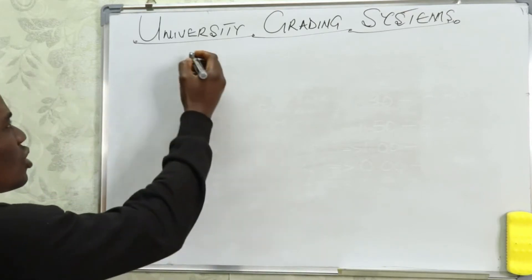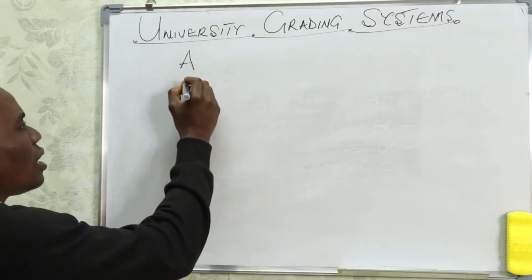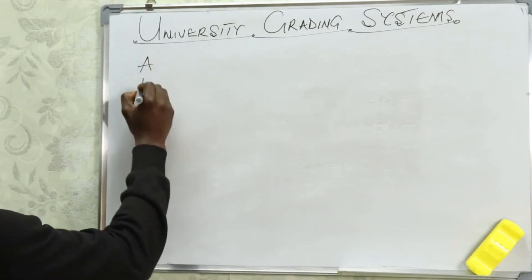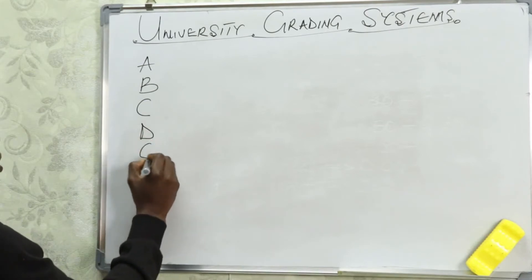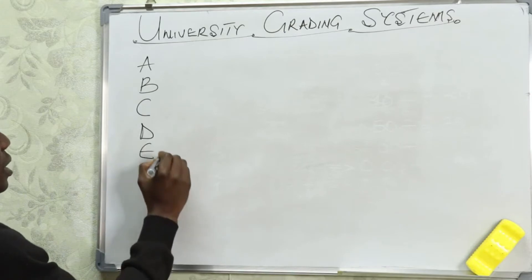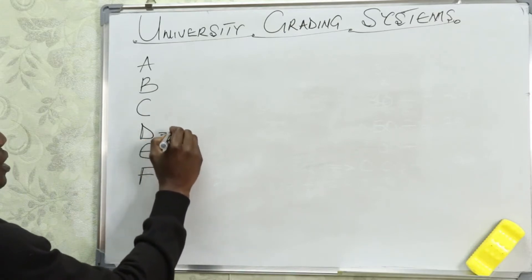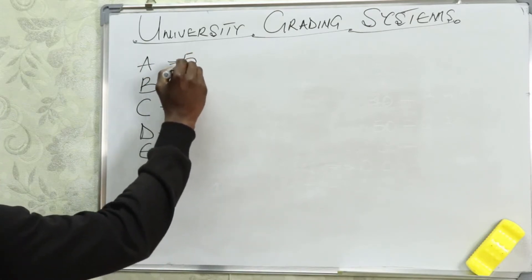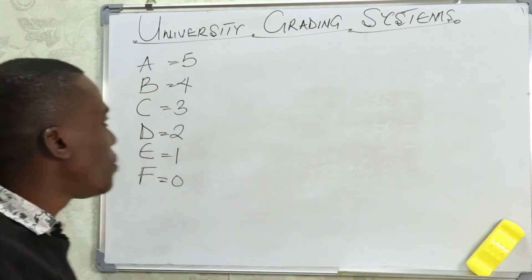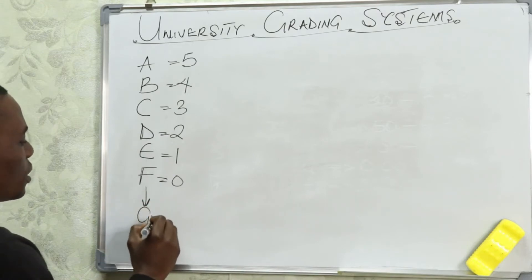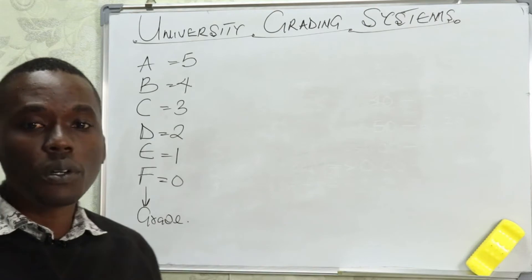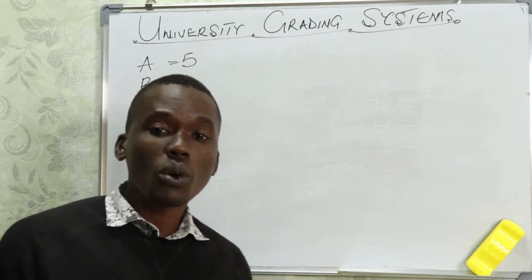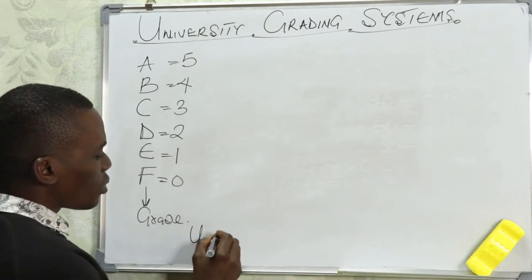The grading system in the university is similar to the grading system in your secondary school. In the university, we have A, B, C, D, E, and F. F is 0 points, E is 1, D is 2, C is 3, B is 4, and A is 5. These are what we call your grades in the university — the grades you will be earning — and each course you offer will have what we call units assigned to it.